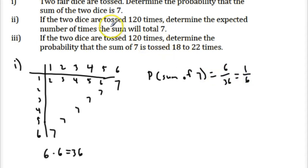For part two, if the two dice are tossed 120 times, determine the expected number of times the sum will total seven. Well, part two, we know that would be expected number of times, so let's say E of X, and let X be the random variable where the two dice are totaling seven.